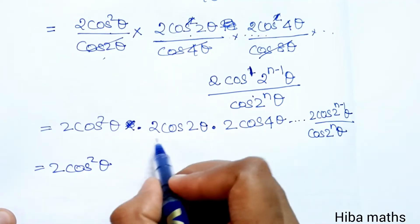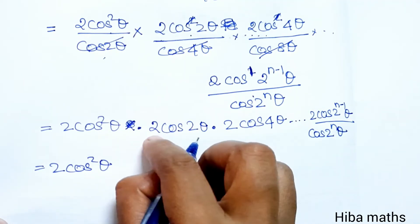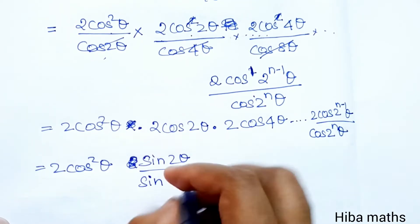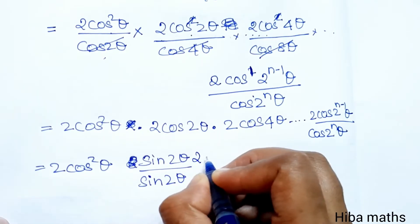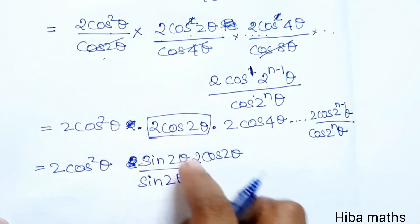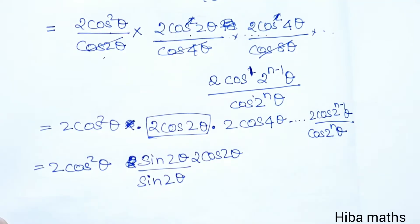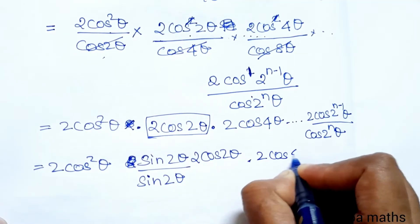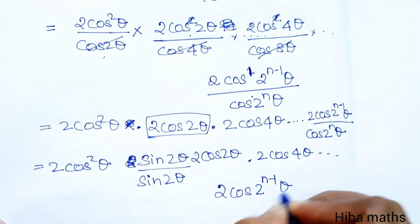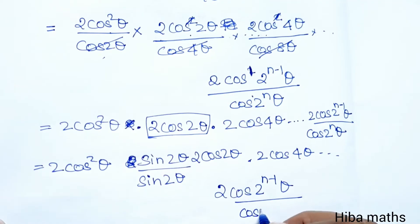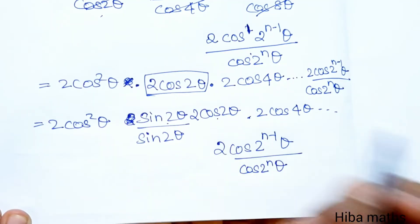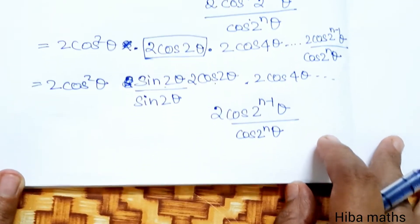Now we multiply and divide by sinθ. Using the identity 2sinθcosθ = sin2θ: the term 2cos2θ with sinθ gives sin2θ divided by sinθ. Then 2cos4θ gives sin4θ divided by sin2θ, up to 2cos(2ⁿ⁻¹θ) divided by cos(2ⁿθ).